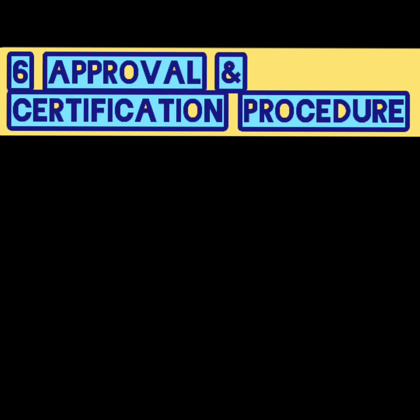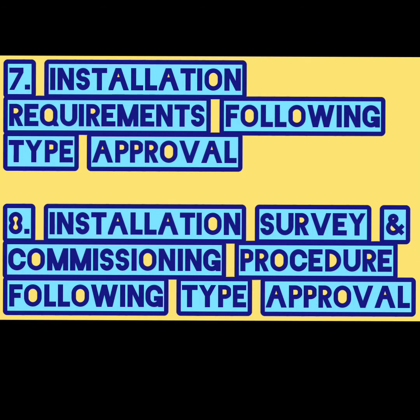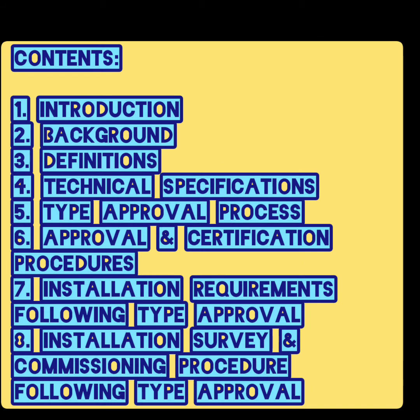Chapter 6 is about the approval and certification procedure. Once the approval and certification process is clear, it's time for installation, so Chapter 7 is the installation requirement following a type approval. Chapter 8 is about installation survey and commissioning procedure following type approval. To quickly summarize the contents: introduction, background, definitions, technical specification, type approval process, approval and certification, and finally installation and installation survey.